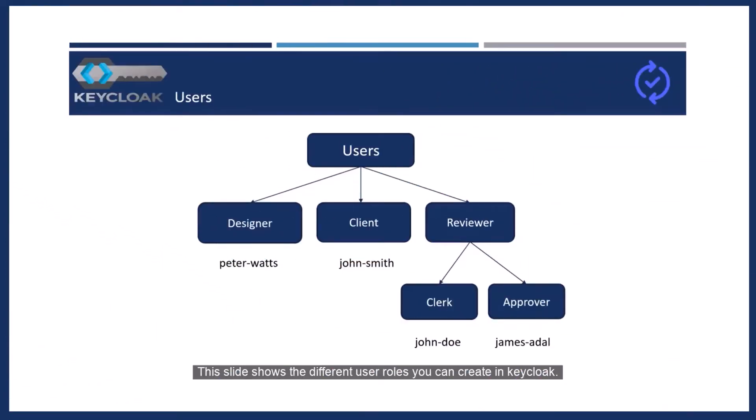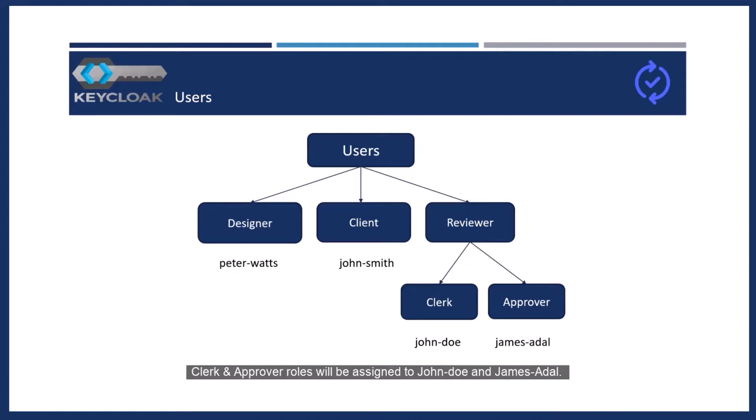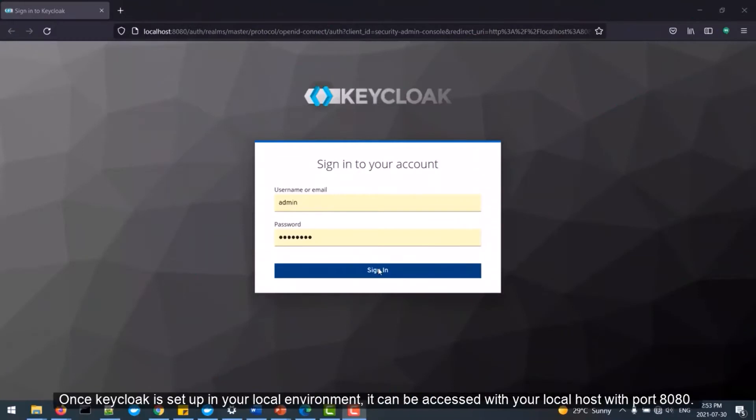This slide shows the different user roles you can create in Keycloak. For this demonstration, we will be creating four users: Peter Watts with the designer role, John Smith with the client role, and John Doe and James Adal with the clerk and approver roles respectively. The clerk and approver roles are part of the main group reviewer.